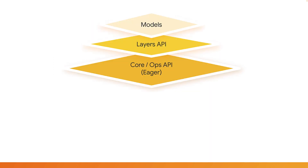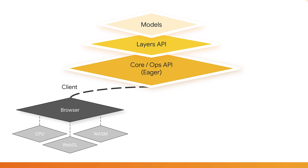Here you can see how it all comes together. At the top you have pre-made models, built upon the layers API, which itself sits on top of the ops API. This then understands how to work within many different environments, such as the client side, which includes the web browser. Each one of these environments can execute on a number of different backends. By backend here, I do not mean server-side — backend in this context refers to the hardware on which it will be executed.